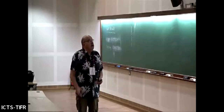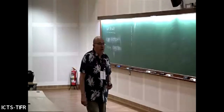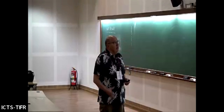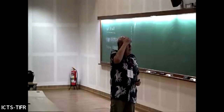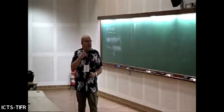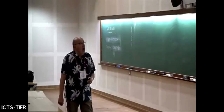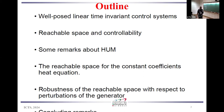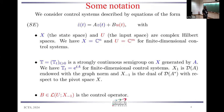So this is the plan: I'll remind you of the context introduced yesterday on well-posed linear systems, very briefly. Then I will go to reachable spaces, and since Bellassen incited me yesterday, I will do some remarks on HUM and its connection with reachable spaces. The fourth part is devoted to the detailed study of the reachable space for the constant coefficients — but in fact not only for the heat equation with possibly some variable coefficients. I will conclude with some conclusions and remarks.